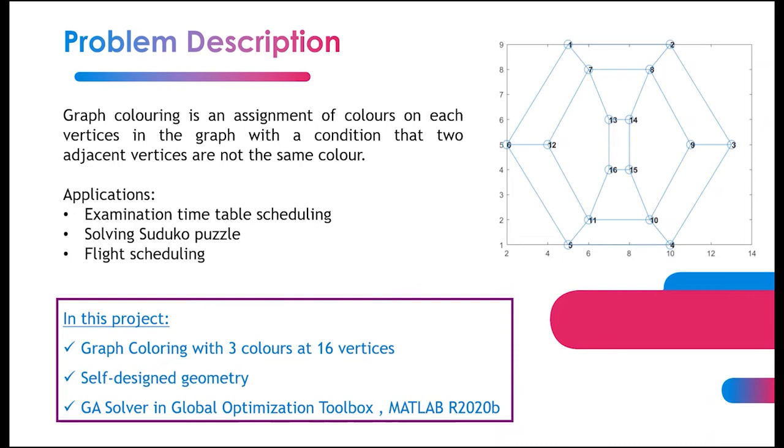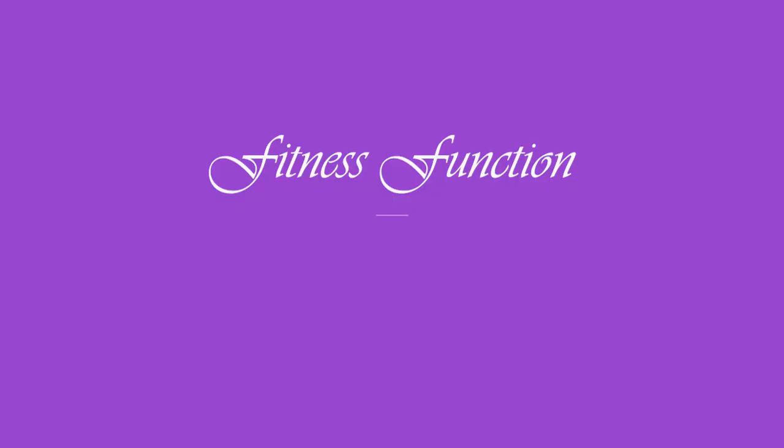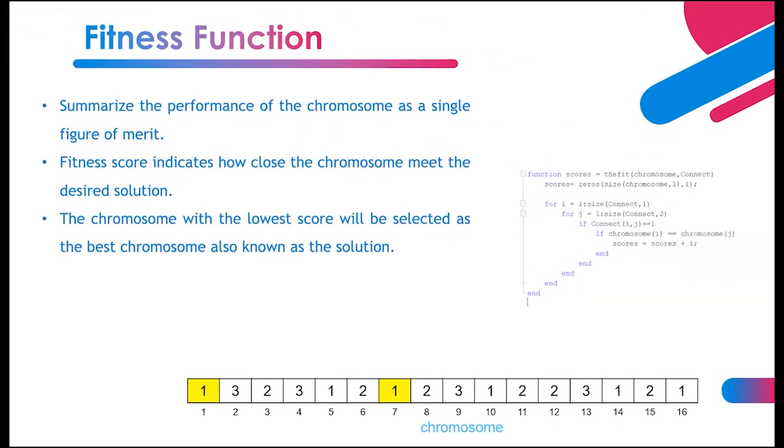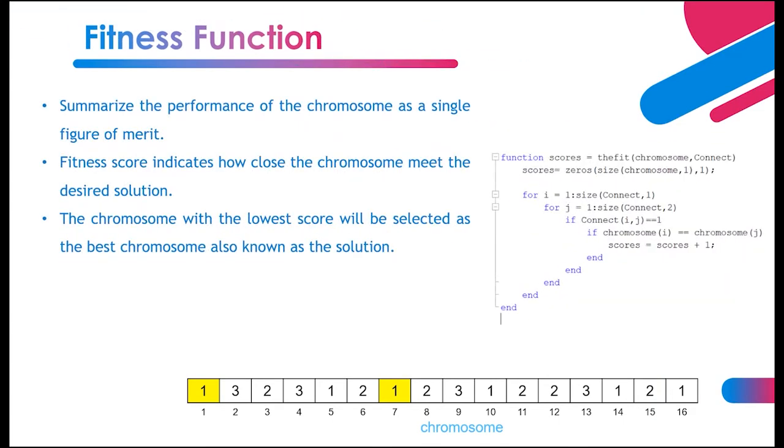GA solver that is available in Global Optimization Toolbox MATLAB R2020b is used to solve this problem. Fitness function is used to guide the genetic algorithm to the optimal design solution. It summarizes the performance of the chromosome as a single figure of merit.